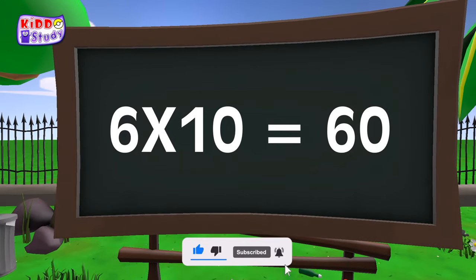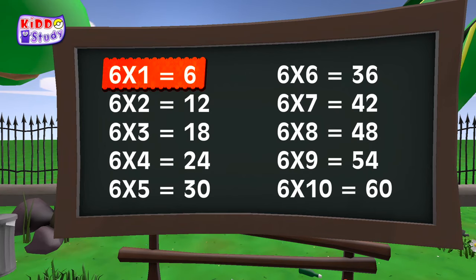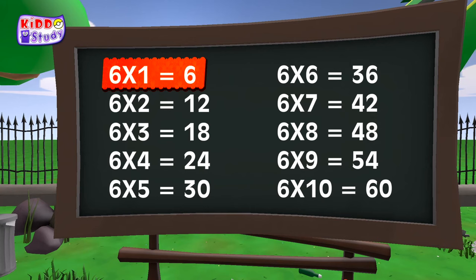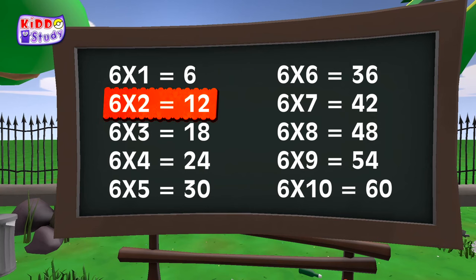Once again children. Six ones are six, six ones are six. Six twos are twelve, six twos are twelve.